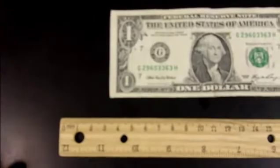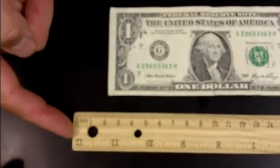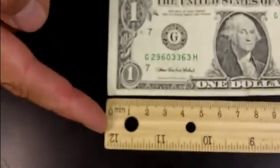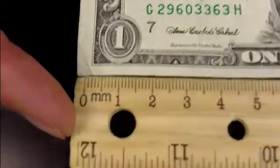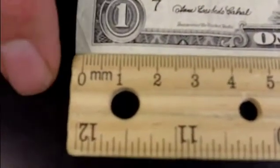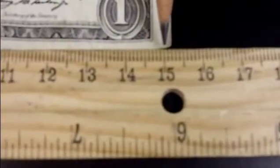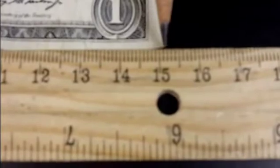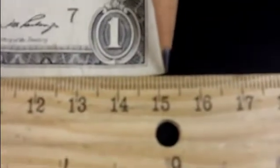Consider measuring a dollar bill. If we were to measure it from the end of the ruler, the dollar bill is 15.12, about 15.2 centimeters long. However, that's not how long it is.